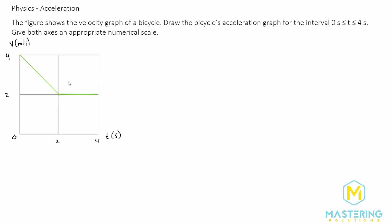So let's figure out what the accelerations are for these two sections. To do that we find the acceleration by getting the slope of a velocity versus time graph. Just as with a position versus time graph we get velocity from the slope, for a velocity versus time graph we get the acceleration from the slope. So acceleration equals the change in velocity over the change in time, which is the same formula as the slope: change in rise over change in run.